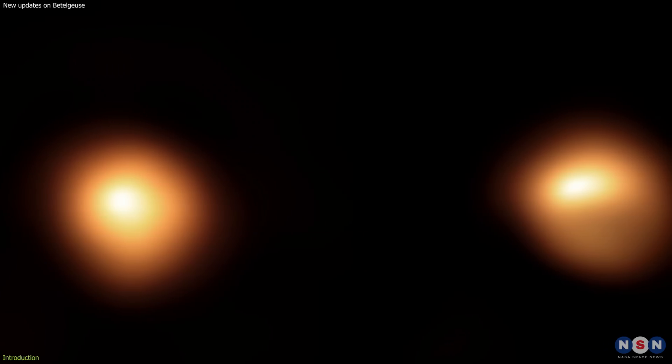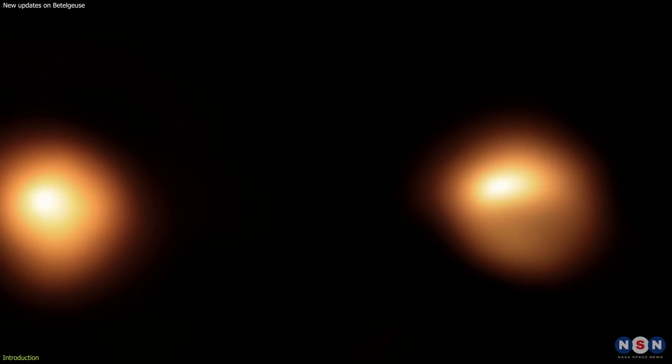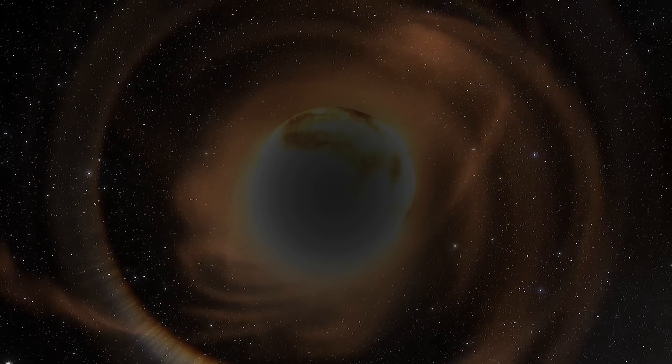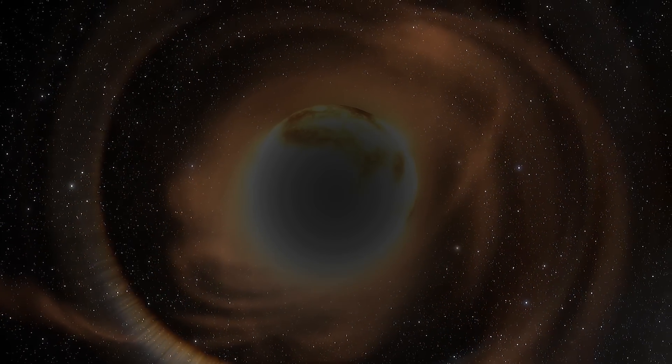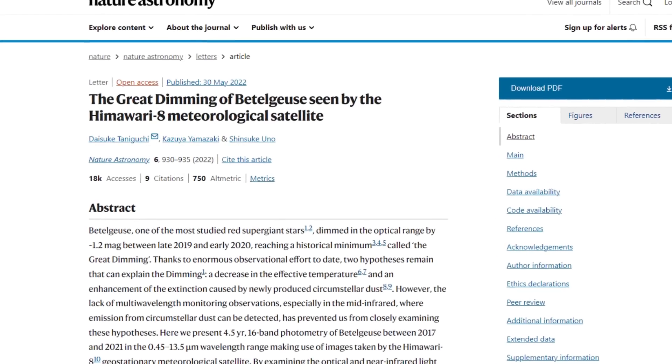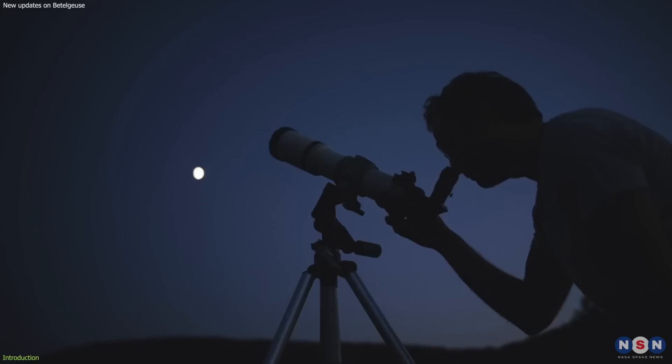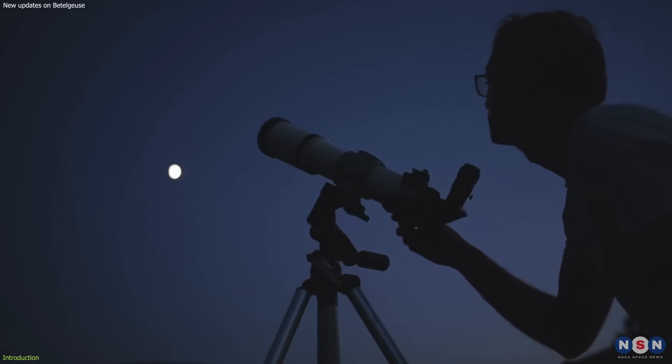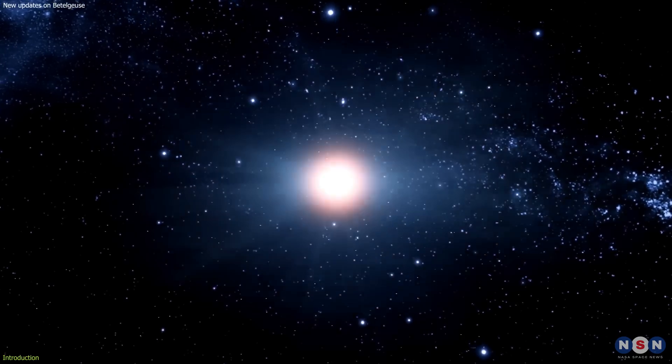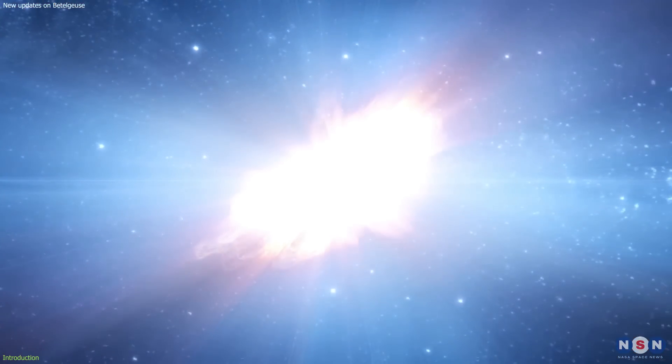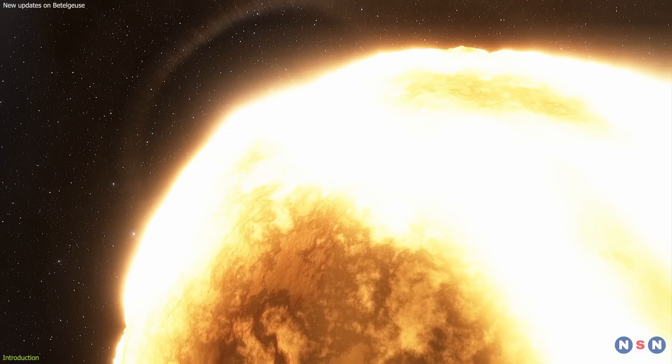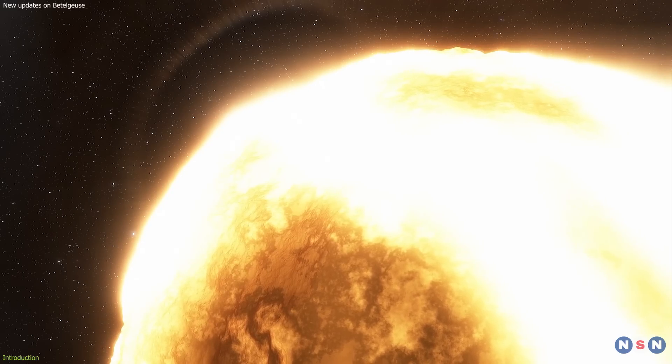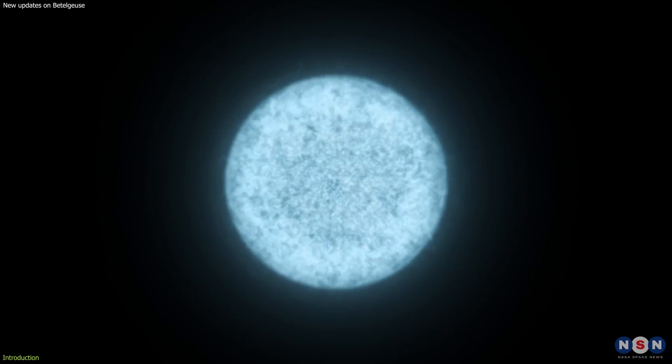But recently, it became fainter than ever before, losing more than two-thirds of its luminosity in a matter of months. This event was dubbed the Great Dimming of Betelgeuse, and it sparked a lot of speculation and curiosity among astronomers and the public alike. Was Betelgeuse about to explode as a supernova? Was it a sign of some mysterious phenomenon happening inside the star? Or was it just a normal cycle of variability?